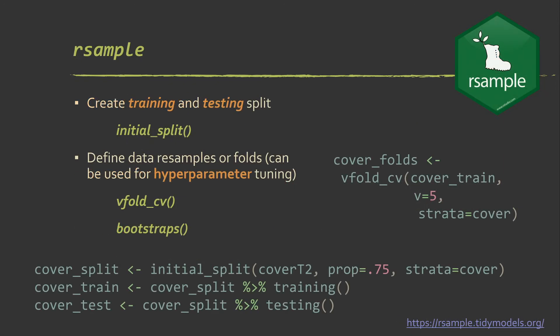Again, R sample is used for data partitioning. So, for example, the initial split is used to define a training and testing split. For hyperparameter tuning, you can set up—you can use V-fold CV to set up cross-validation, and bootstraps to set up bootstrapping. So here's an example of setting up a training test split.